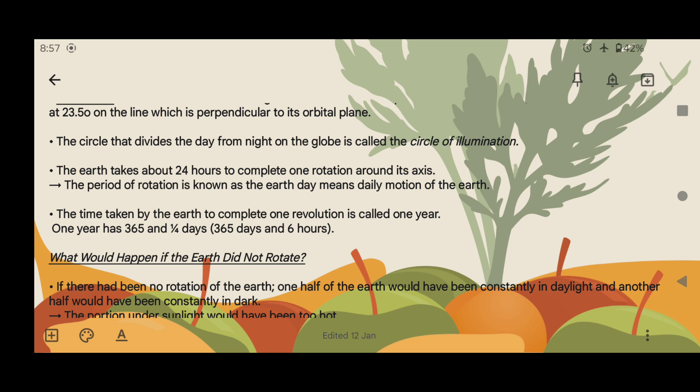The time taken by Earth to complete one revolution is called one year. One year has 365 and one-fourth days: 365 days and 6 hours.